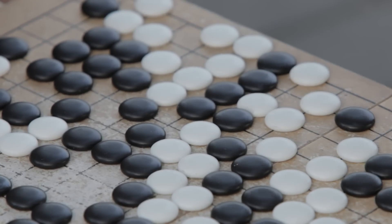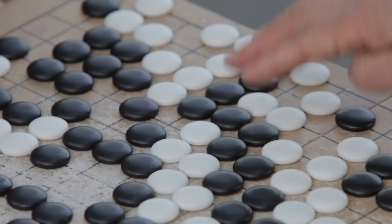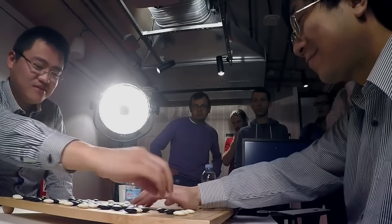Go players base moves on what the board looks like and how it feels. To win, a machine must reproduce the magic of human intuition.